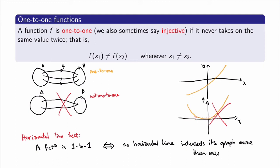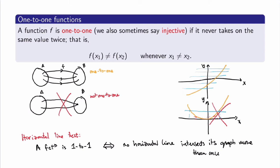That makes sense: if a horizontal line crosses the graph more than once — say twice — that means there are two points x₁ and x₂ which have the same y-value, so the function is not one-to-one. The first graph does satisfy the horizontal line test because for any horizontal line they intersect the graph at most once, so there will never be two different x-values with the same output value. That's a very useful test to determine whether a function is one-to-one.